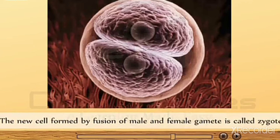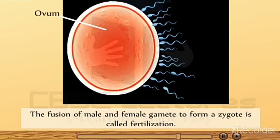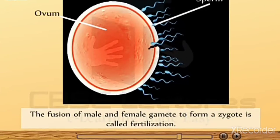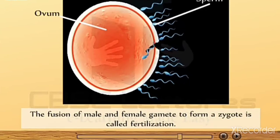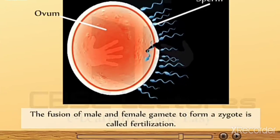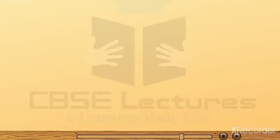This process of fertilization is the meeting of an egg cell from the mother and sperm cells from the father. Let us study about fertilization. The fusion of male and female gamete to form a zygote is called fertilization.